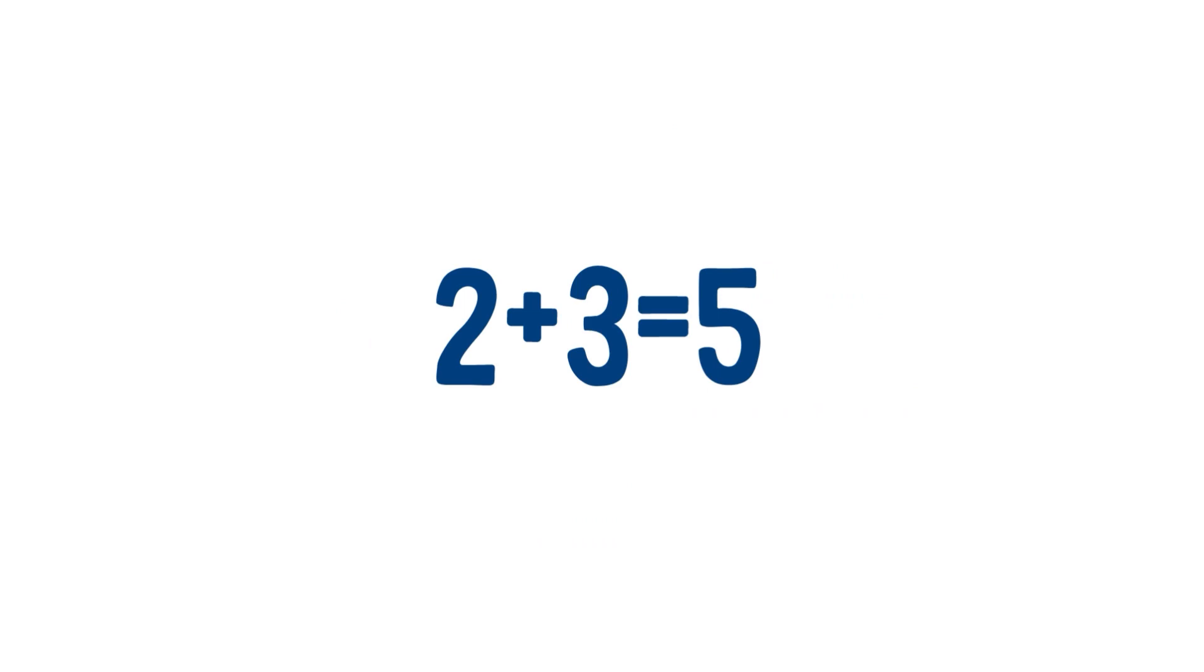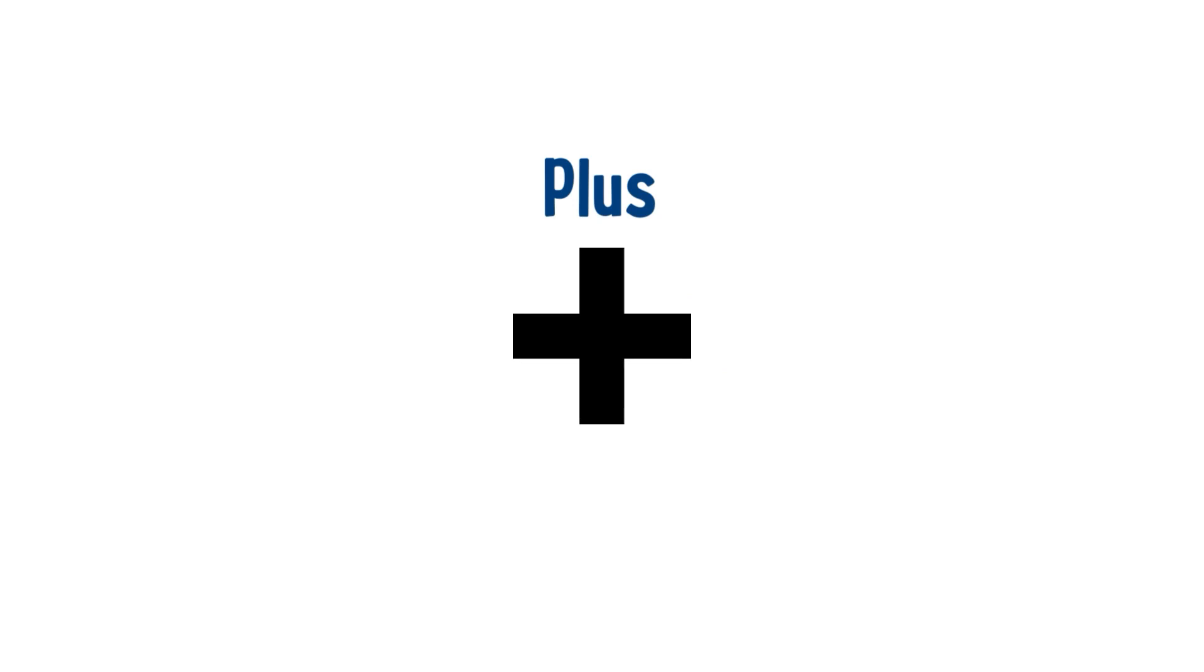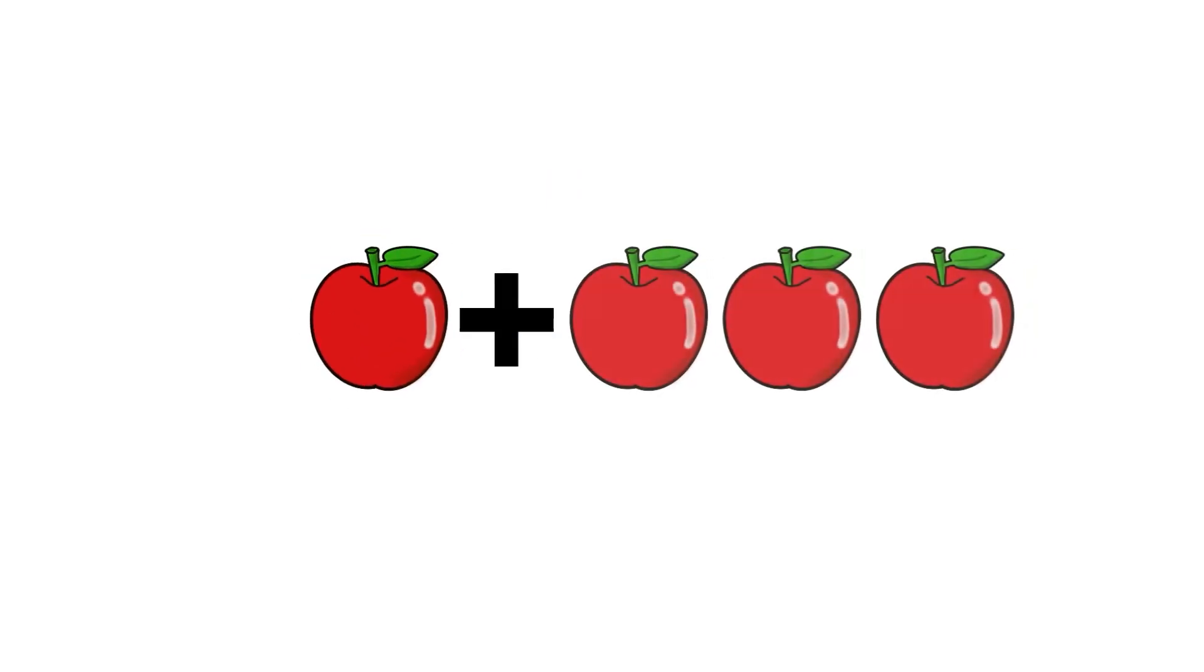Now, let's move to other symbols. That way, we can understand better with examples. This is a plus sign, also known as the addition symbol. We use this symbol when we want to bring two numbers together. For instance, if we have one apple and we add three more apples, how many apples do we have in total?